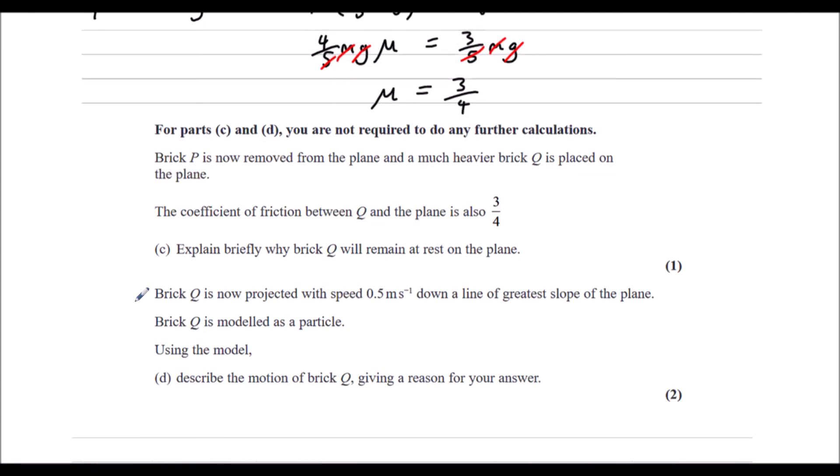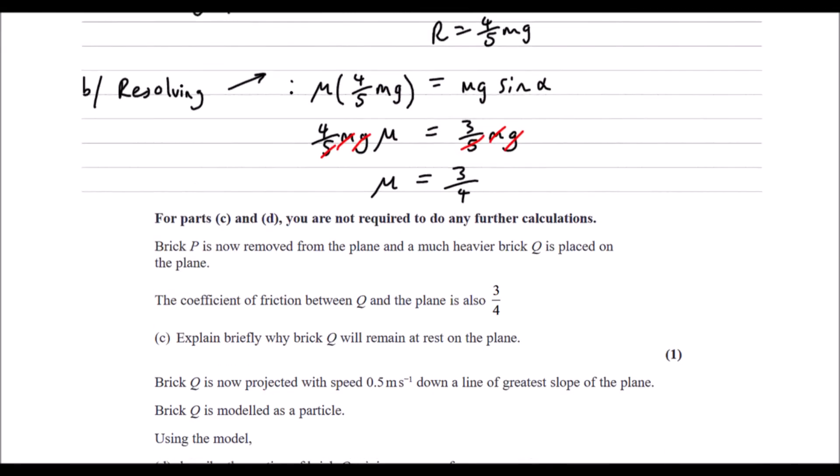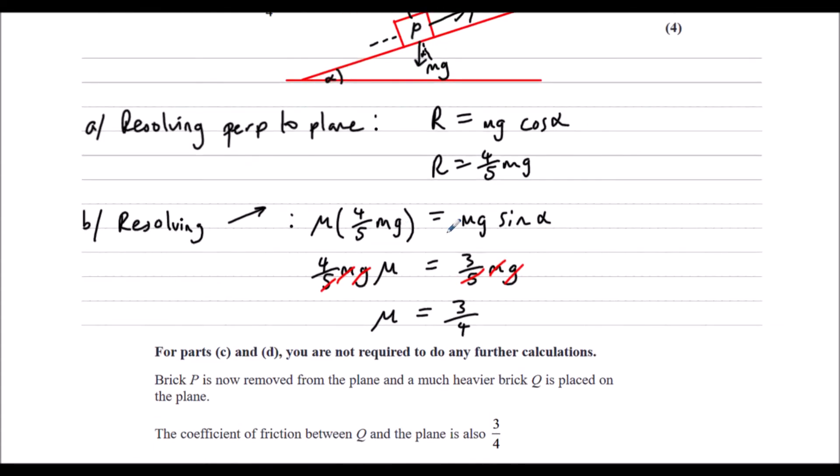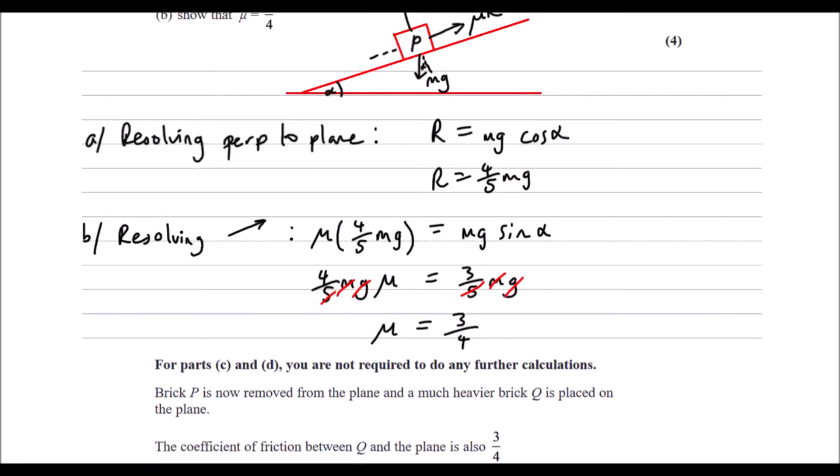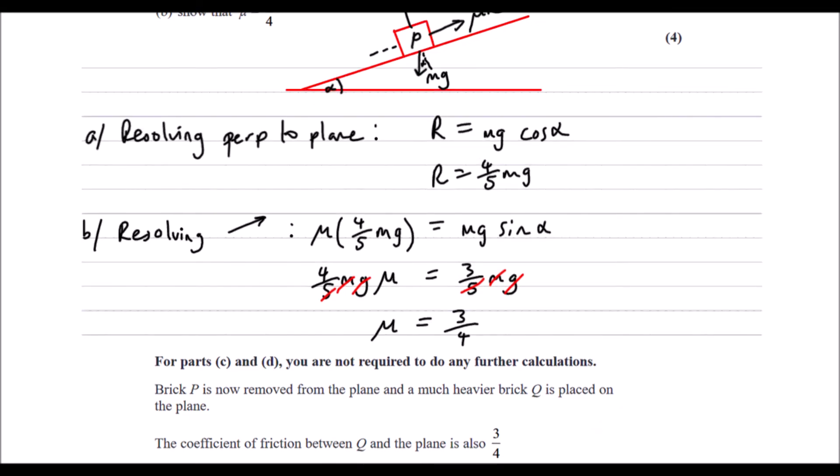Explain briefly why brick Q will remain at rest on the plane. So with our forces up and down the plane, M actually cancelled out. M isn't relevant. So we're going to have exactly the same calculation. So the forces up will still equal the forces down because the M cancels out from both sides.